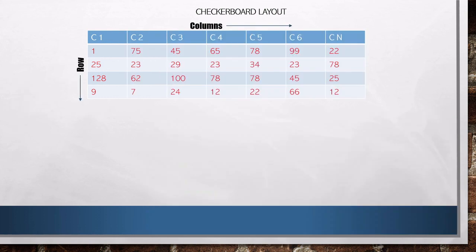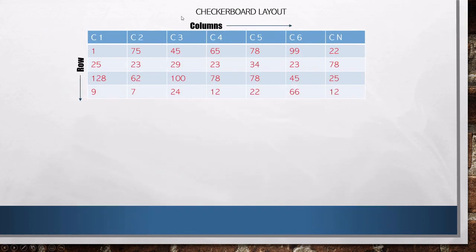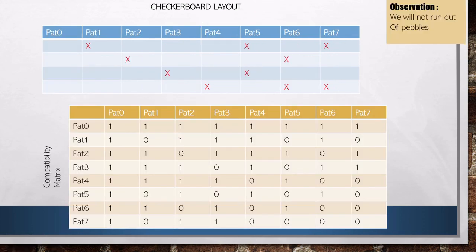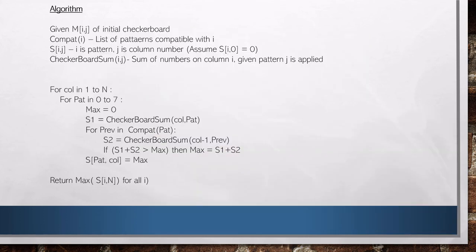Quickly running over it from the beginning: first you identify what patterns are valid. We observed that the number of pebbles will never run out in this problem, and therefore it is a simpler problem. If we ran out of pebbles, the problem could get more complicated — you might have to skip over columns or consider the number of remaining pebbles as an additional dimension. But here, pebbles are not a problem. We went through each column and each pattern, and our equation connected each column's solution to the previous column's solutions.